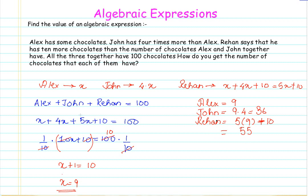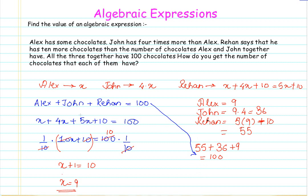To cross-check that our sum is correct, we add all three values: 55 plus 36 plus 9. That gives us 64 plus 36 which is 100. So we arrive at the same value we started with. This confirms that the value of x we found is correct, because the sum of chocolates for Alex, John, and Rehan comes to 100. That is the first method to find the value of x.